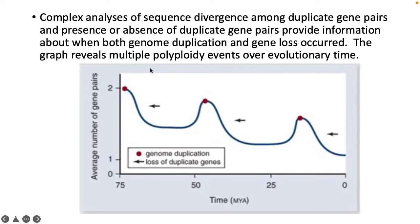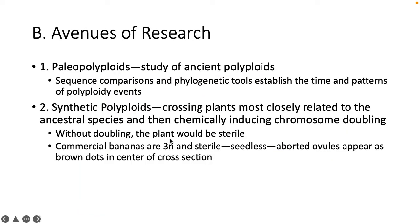Sequence divergence among duplicated gene pairs shows that genome duplication is followed by a period of rapid loss of duplicated genes. Avenues of research include paleopolyploids — the study of ancient polyploids using sequence comparisons and phylogenetic tools to establish time and patterns of polyploidy events. Another avenue is synthetic polyploids: crossing plants most closely related to the ancestral species, then chemically inducing chromosome doubling. Without doubling the plant would be sterile, so we have to double it. Commercial bananas are 3N and sterile — seedless — and the little black dots inside the banana are the aborted ovules.